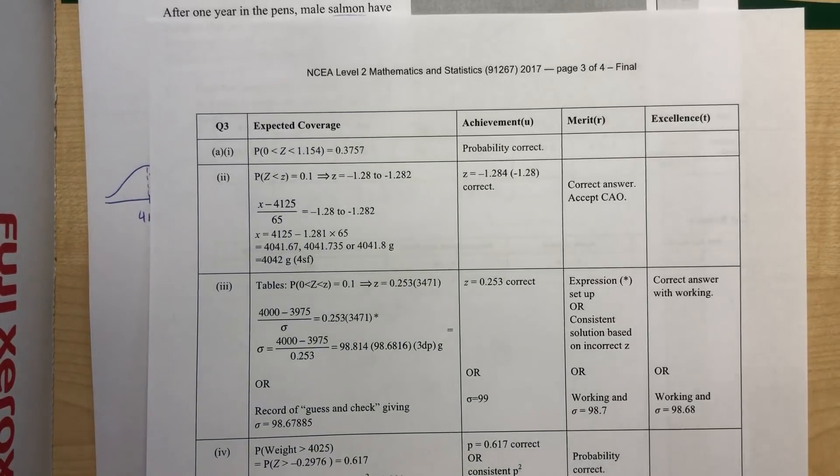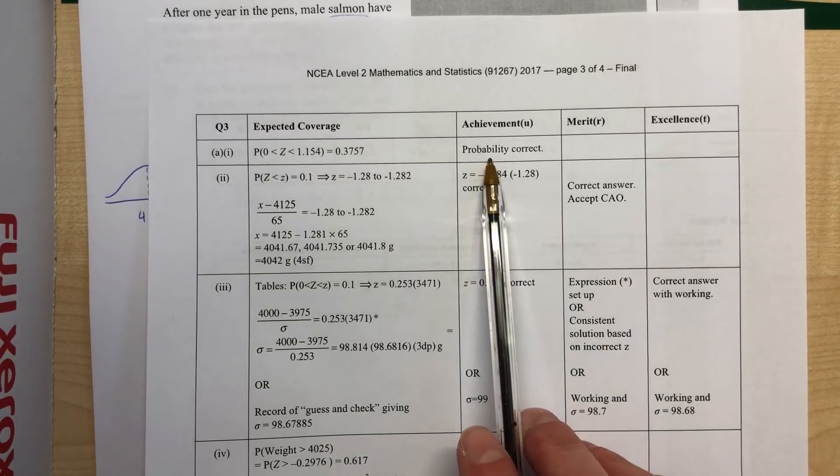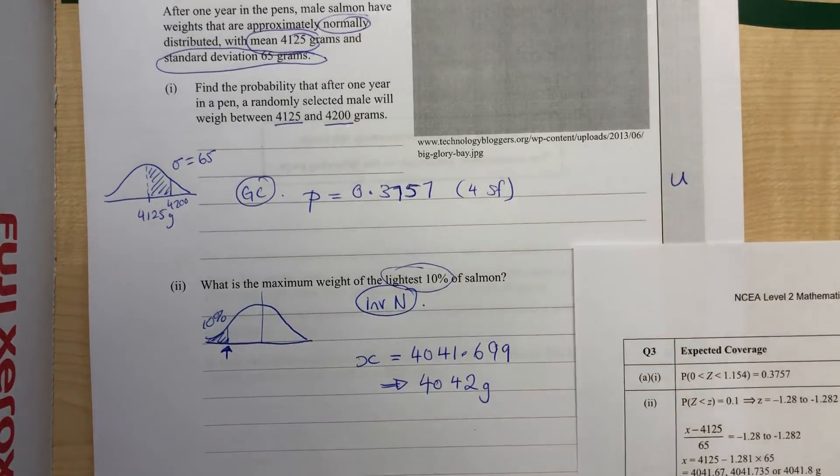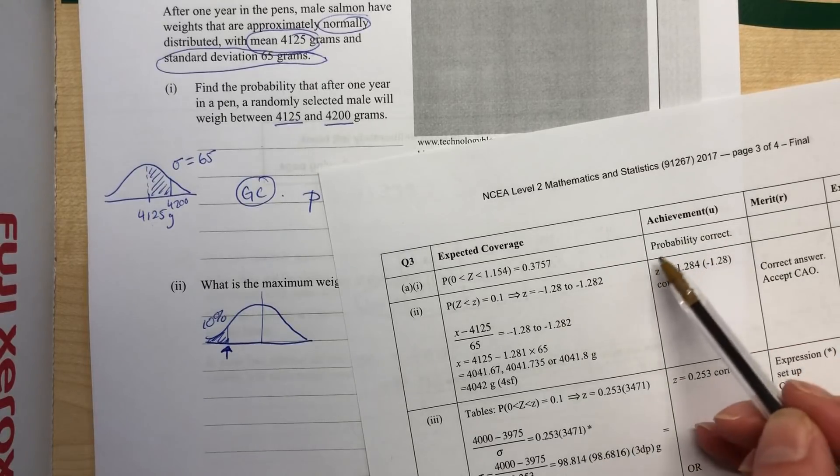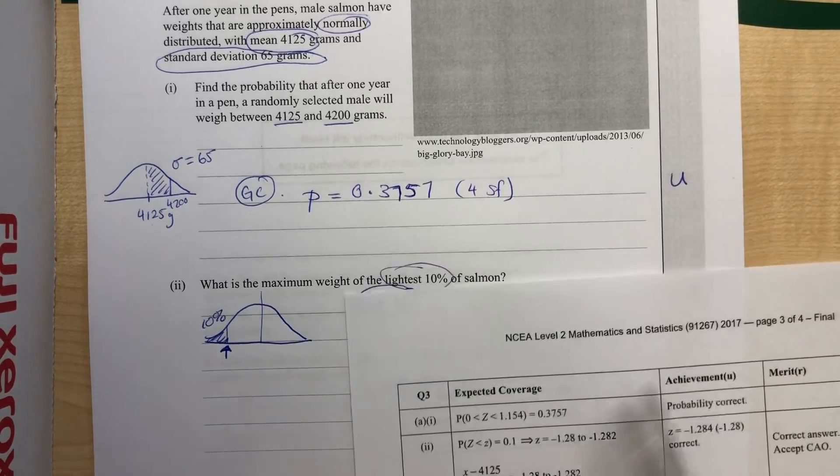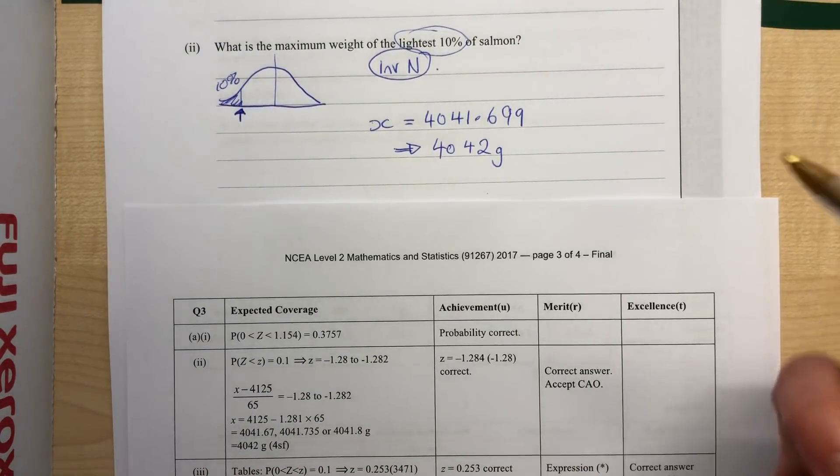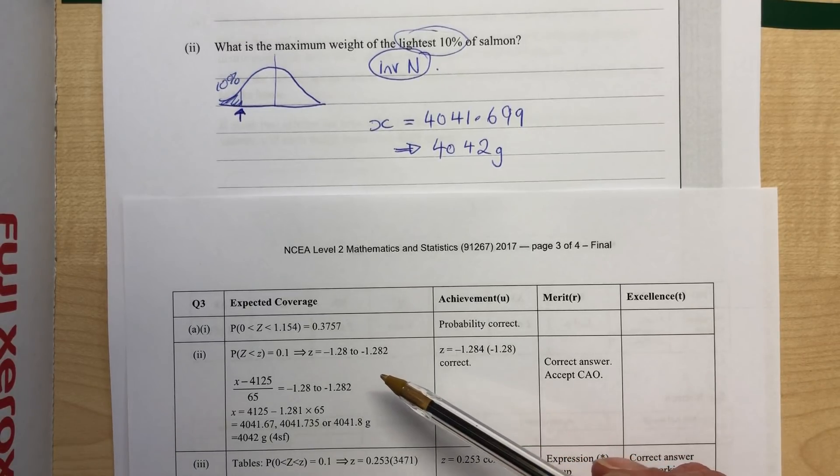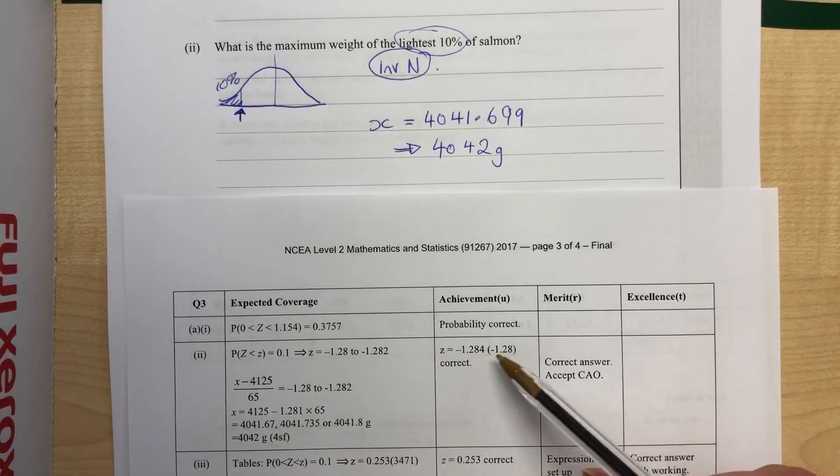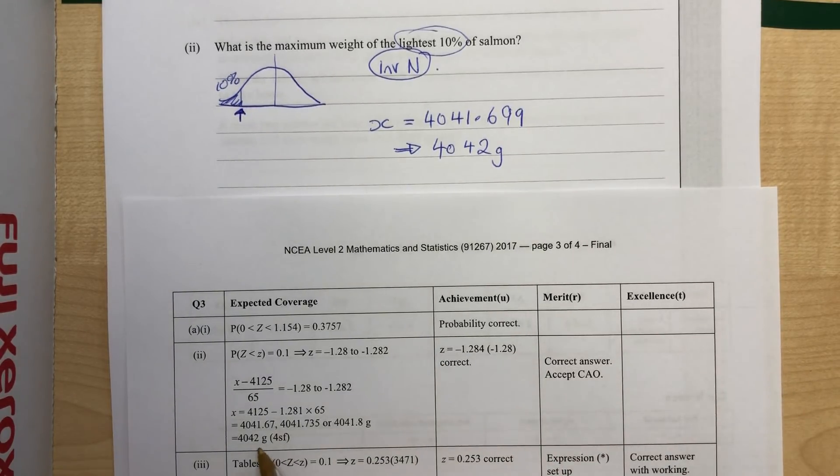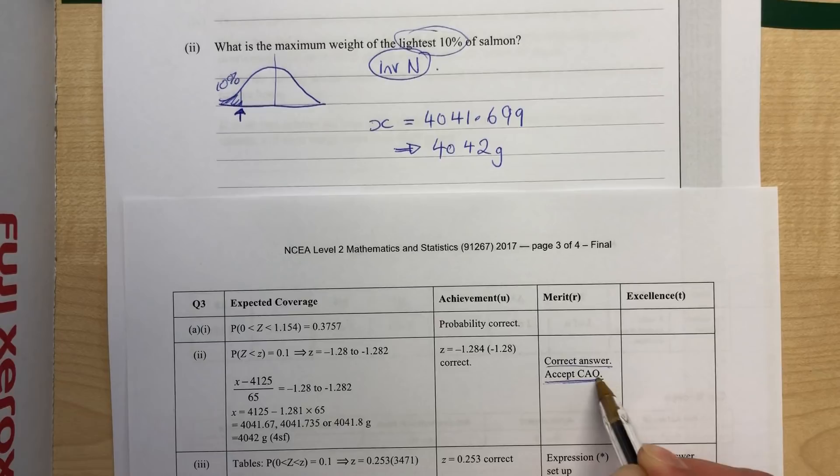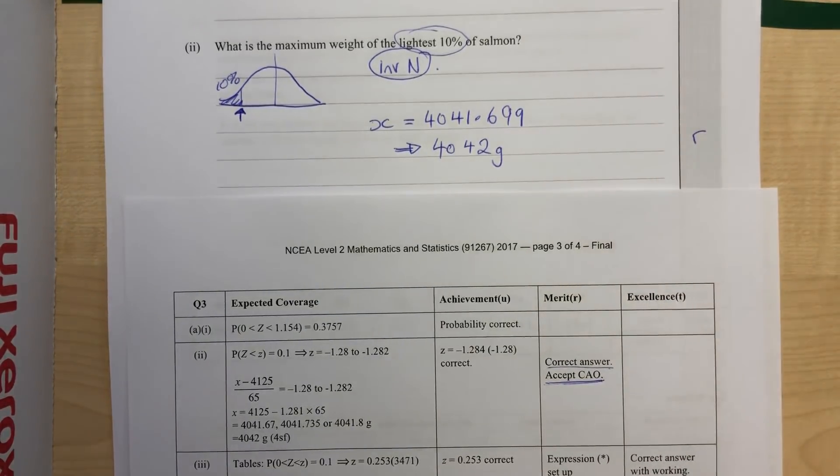Now if you take a look at the mark schedule for that question, it looks like this. So we can see just getting a straightforward probability on that first question. This one got us a U. That's a point towards achieved. So we give it that U mark. And this one here, so part two, if we wrote down what the z value was, that would be if you're working off of tables, not the graphics calculator, then you would get an achieve point there. But if you're going straight to the graphics calculator, all you need is the final answer. See here it says correct answer. You can accept the correct answer only without working. So this one here got us a merit point.